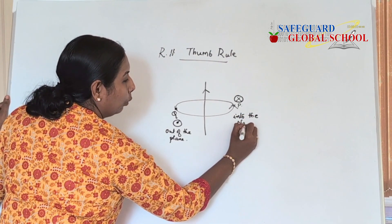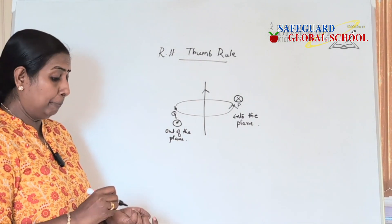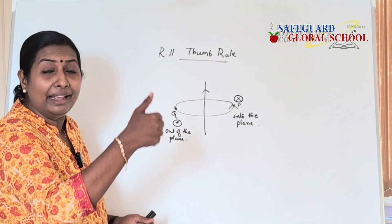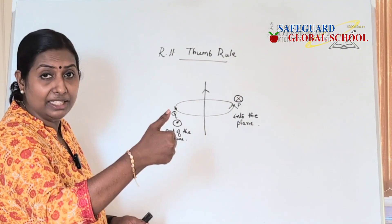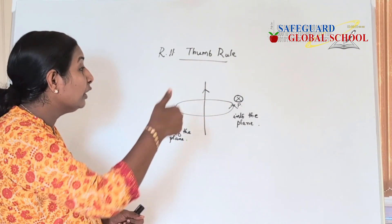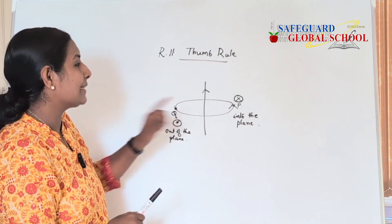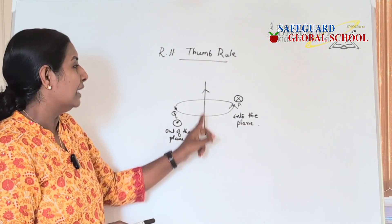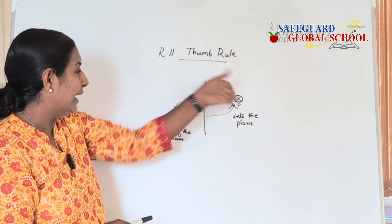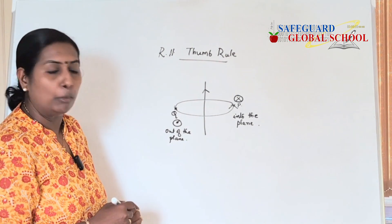So to sum up — what is right hand thumb rule and what is it used for? Right hand thumb rule states that when we imagine holding a current carrying conductor with our right hand, the thumb shows the direction of the current and the curling of fingers shows the direction of the magnetic field. With this example, you can understand that at point P the magnetic field lines run into the plane, and at point Q it is out of the plane of the board.